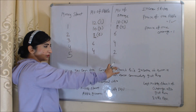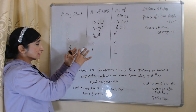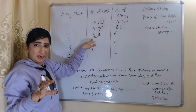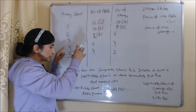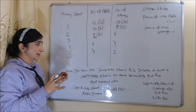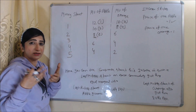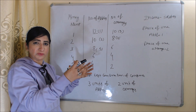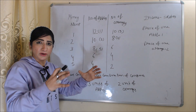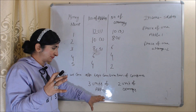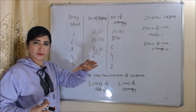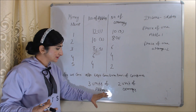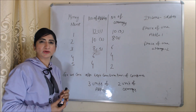According to this law, the consumer should spend his income so that the last rupee spent on each commodity gives equal marginal utility. Here you can see the last rupee spent on oranges gives 8 utils of marginal utility, and the last rupee spent on apples also gives 8 utils. So the consumer has spent his income such that each commodity gives equal marginal utility. The best combination for maximum marginal utility is 3 units of apple and 2 units of oranges.